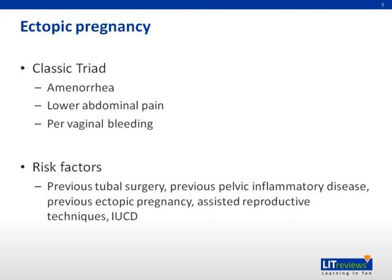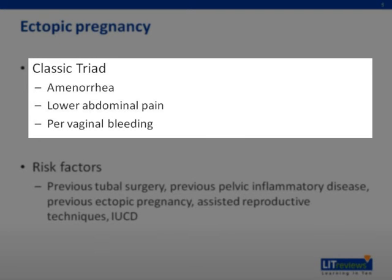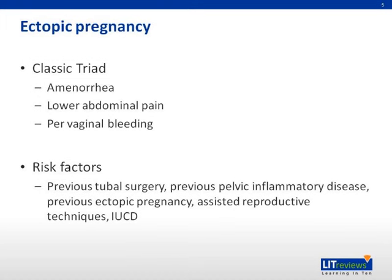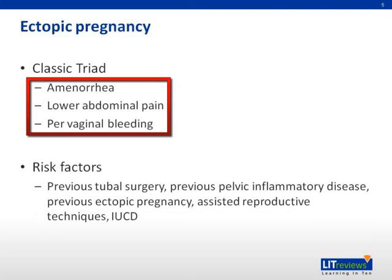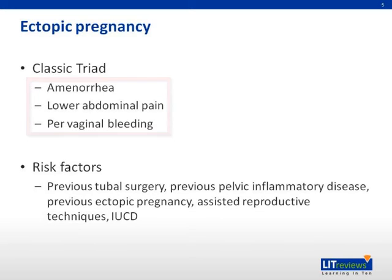Ectopic Pregnancy. The classic triad of an ectopic pregnancy includes amenorrhea, lower abdominal pain, and pervaginal bleeding. In the history-taking process, if any patient presents with the above features and there is suspicion of ectopic pregnancy, risk factors should be searched for.